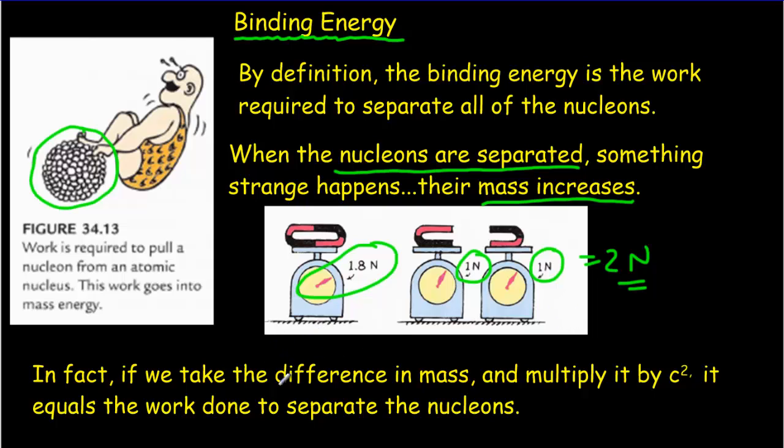If we take that difference in mass between the free nucleons and the nucleons inside the nucleus and we multiply it by C squared, it'll always equal the work done to separate the nucleons. In other words, it's equal to the binding energy of the nucleons. So we can do that type of calculation quite easily.